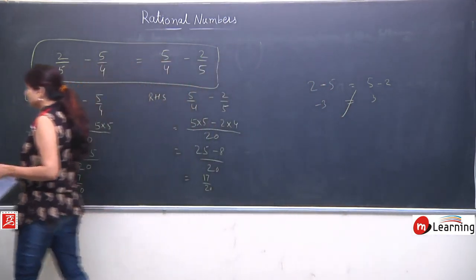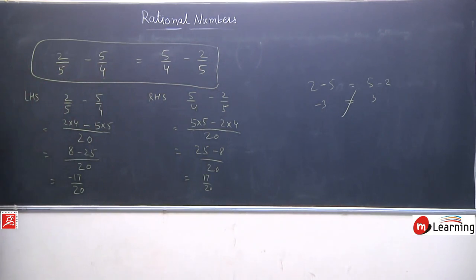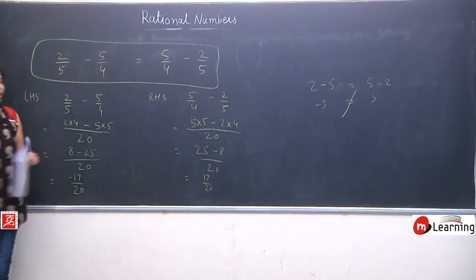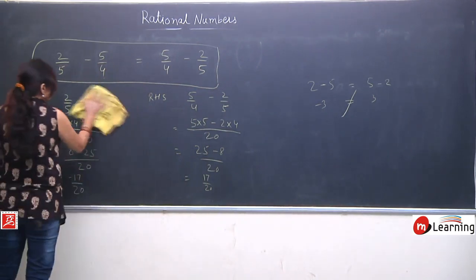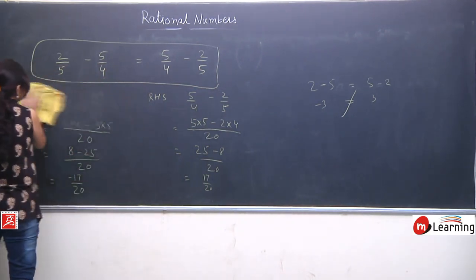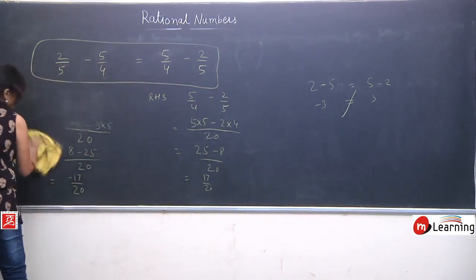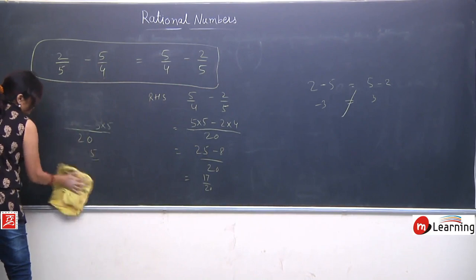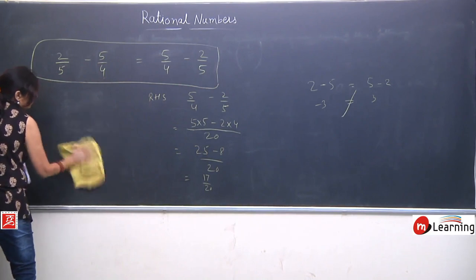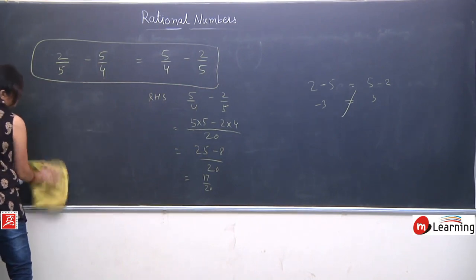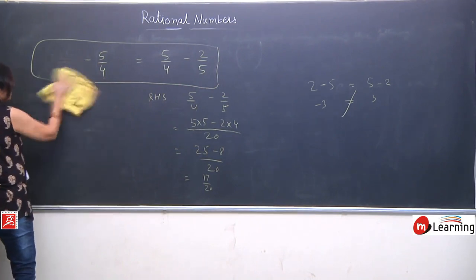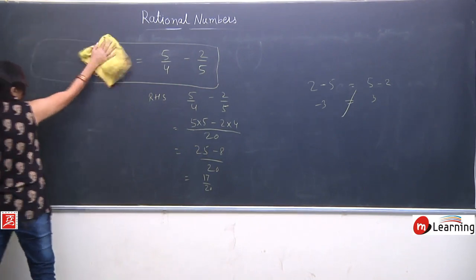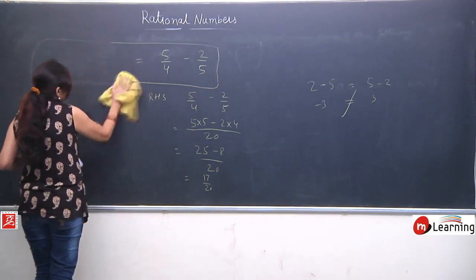Now we will immediately check this same property — commutativity — for multiplication as well, to see whether it is following commutativity for multiplication or not.